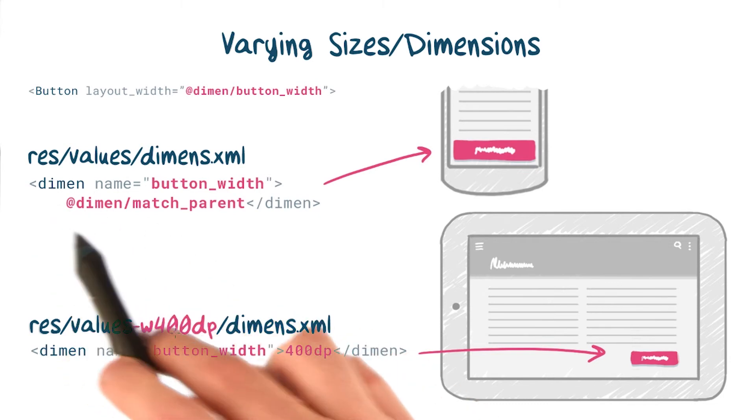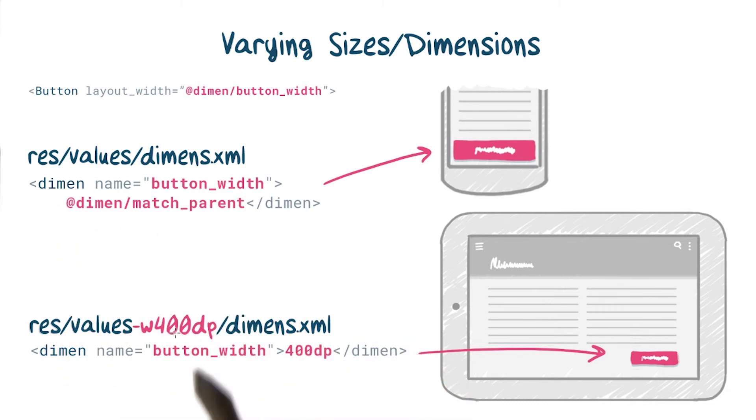Note that simply typing match parent won't work in dimension resources, because it's a special value, negative one, that doesn't have any units.